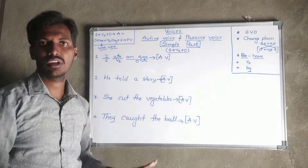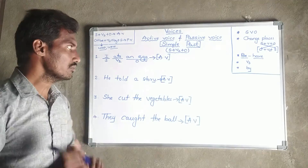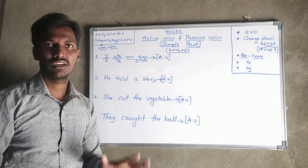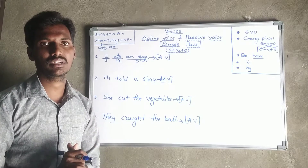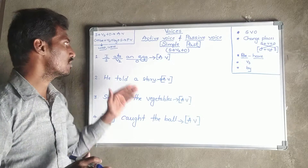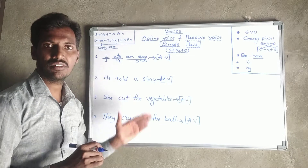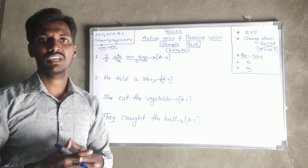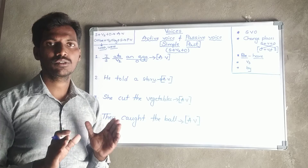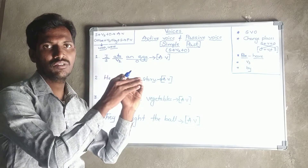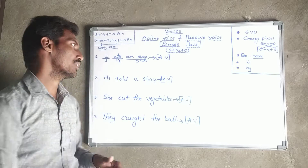B-forms are absent in simple tenses. The main verb is in the form of V2. All the statements are in simple past tense. Now we have to convert all these statements into passive voice. What are the rules and regulations to convert an active voice into passive voice? First of all, you have to find out the S, V, O — that means subject, verb, and object.